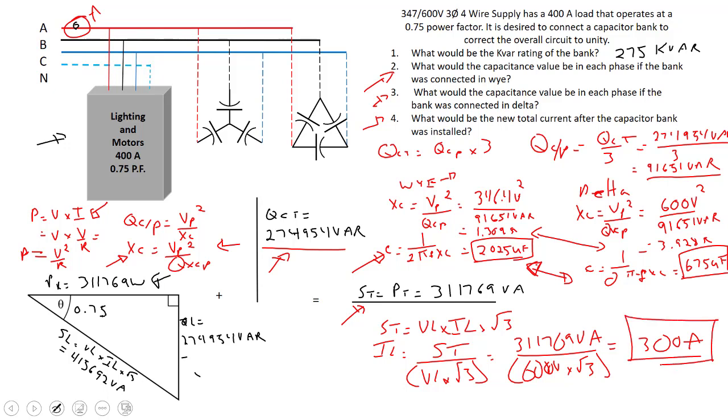Not bad. By correcting this circuit to unity, we have dropped the current down basically 100 amps from where we started. That's pretty good, that's a lot of current. Hopefully this helps out, we're going to see you on the next one.